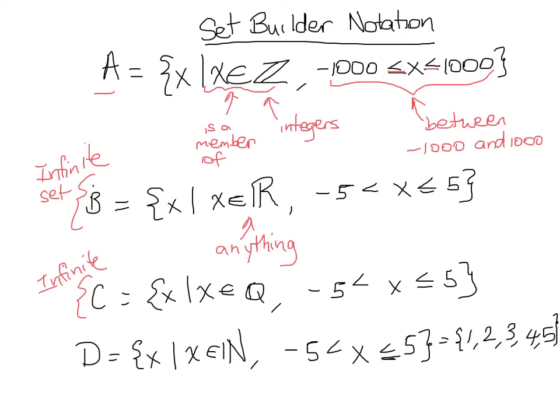Now, if I asked for N of D, what I'm asking for is the number of numbers or the number of elements in set D. In that case, we just count. There's 1, 2, 3, 4, 5. So the number of elements in set D is equal to 5.